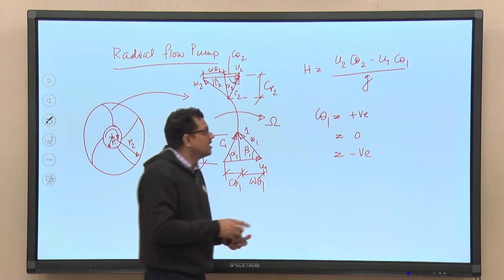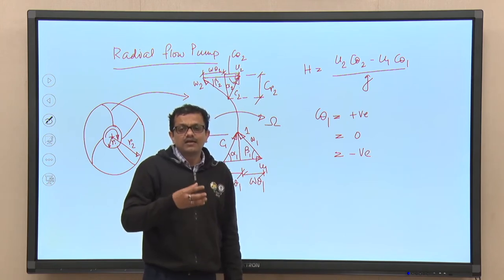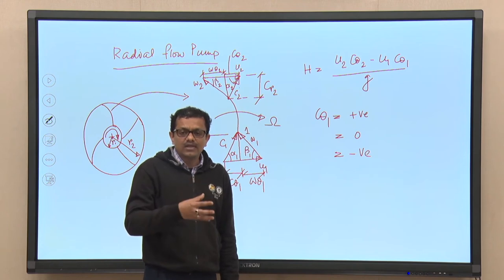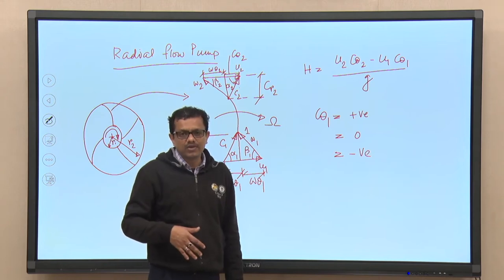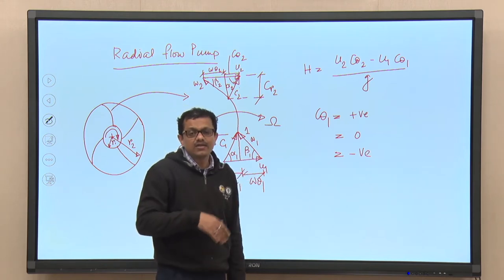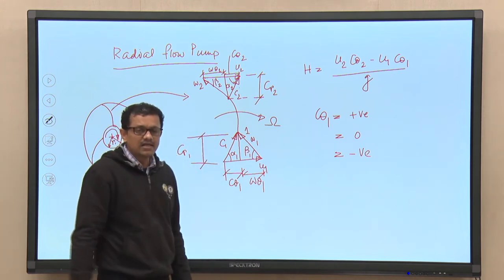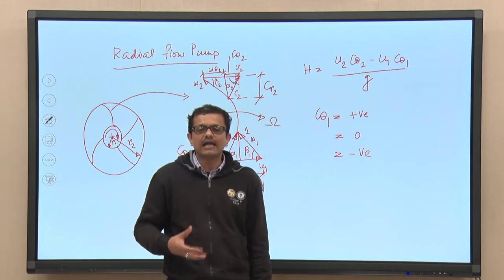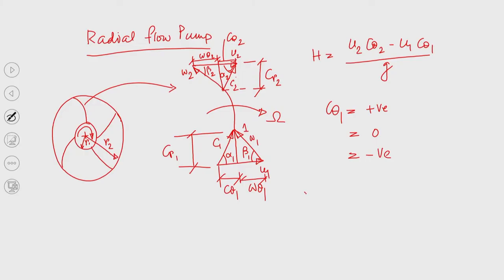If c_theta1 is positive, that portion is subtracted from u2·c_theta2, reducing head. If c_theta1 is zero, head becomes u2·c_theta2 / g. If c_theta1 is negative — meaning fluid entering the impeller rotates opposite to the impeller — the net head developed will be higher. We also note that negative c_theta1 has a bad side effect.